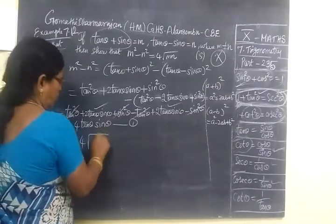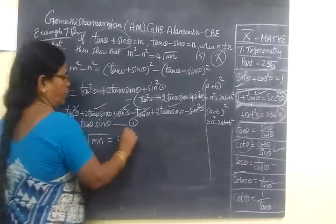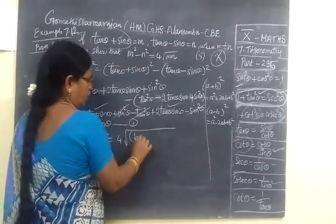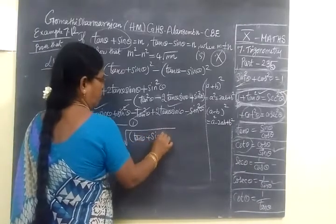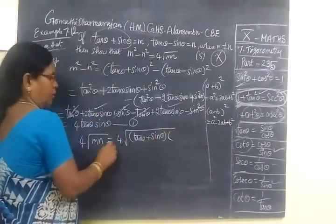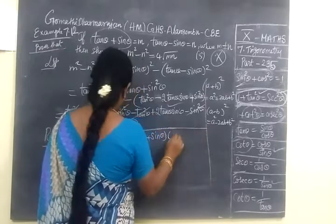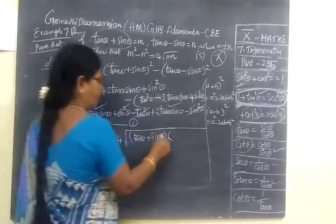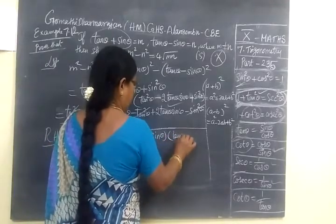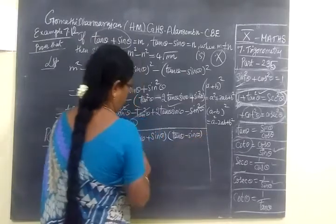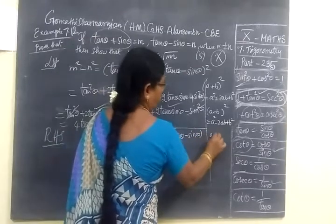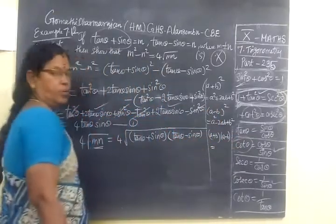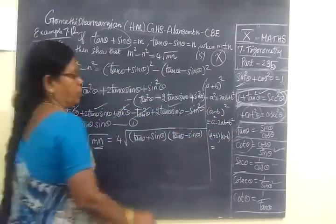Now take RHS. 4 into root of MN equal to 4 into root of M value tan theta plus sin theta, that's your substitute in the bracket. MN into N, tan theta minus sin theta. So this is of the form a plus b into a minus b.